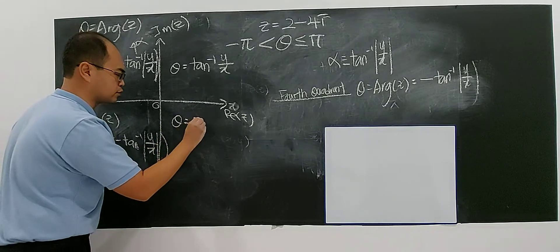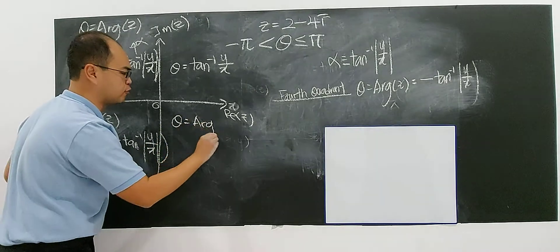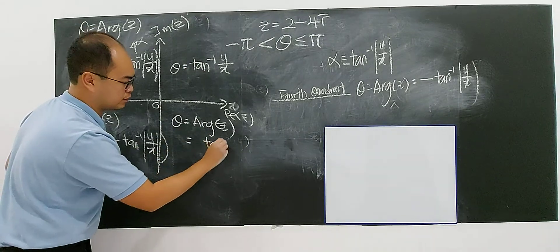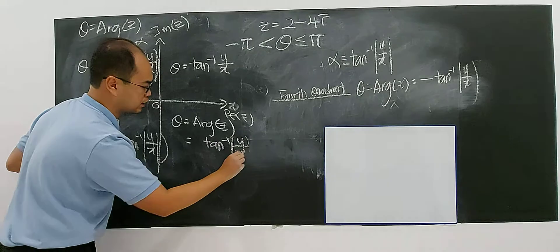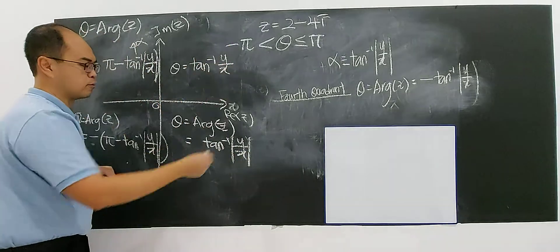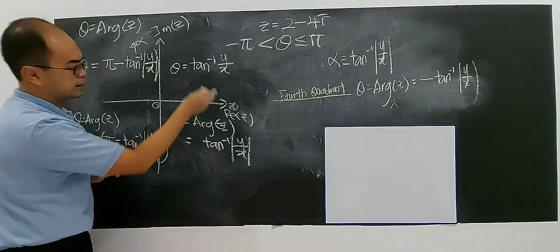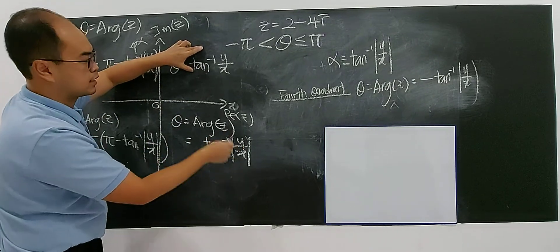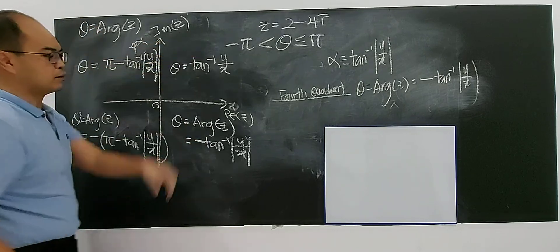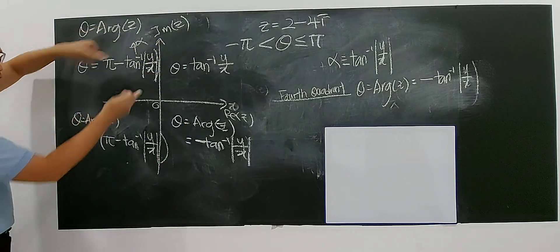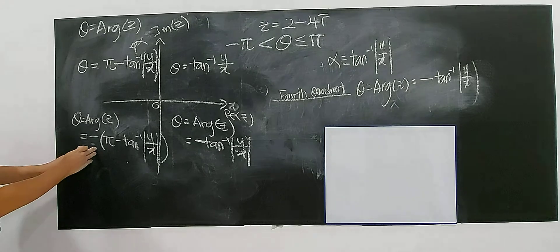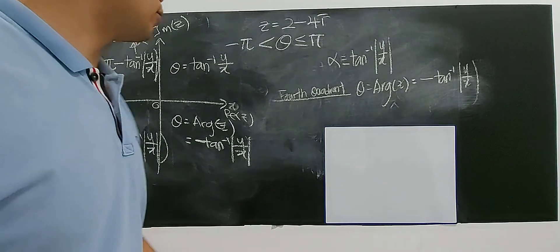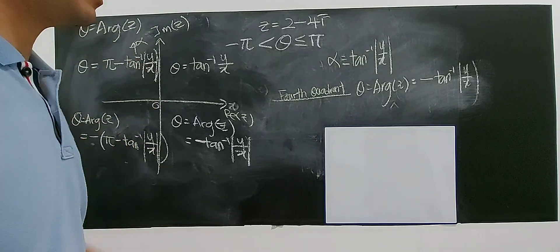Argument for the third quadrant, argument for the fourth quadrant — very simple, it's still the same but with a negative sign. The sign difference: one negative, one positive. This and this are the same but one positive, one negative. Maybe this can help you memorize the formula better. We will talk about how to calculate the argument in the next video.